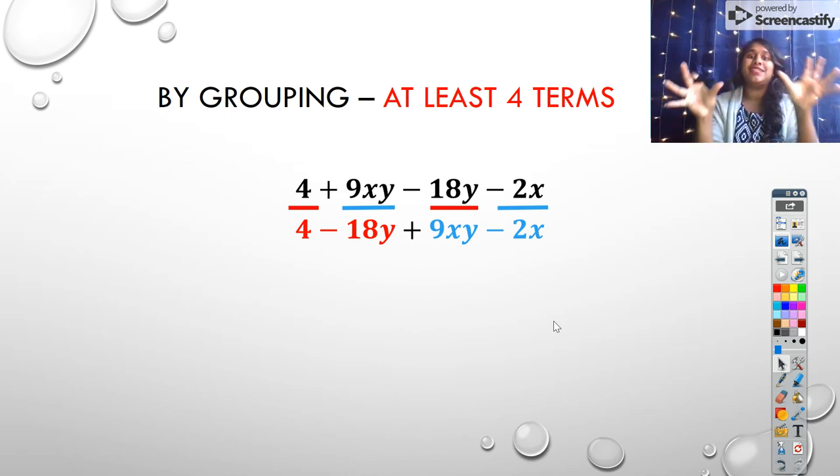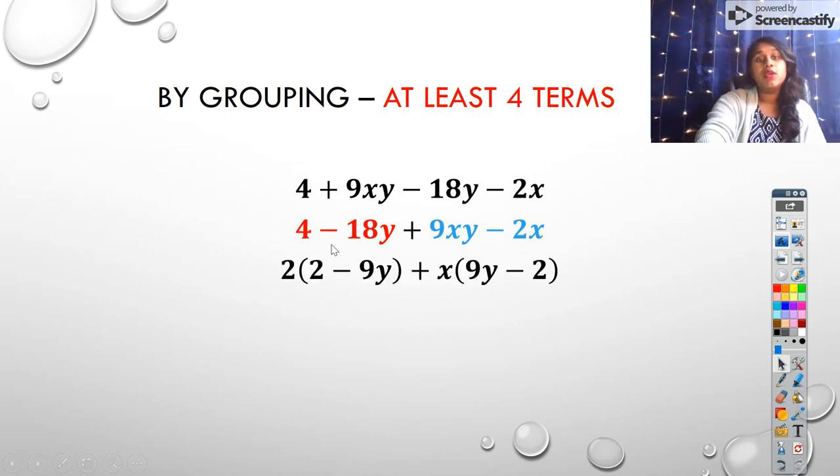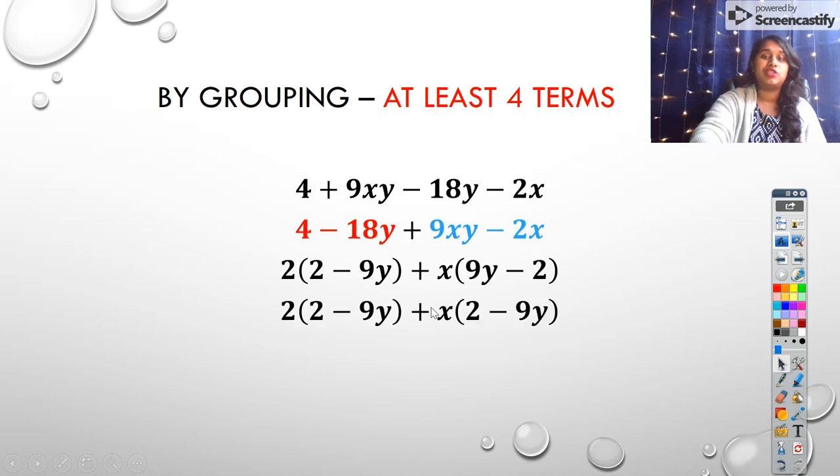And I ask myself what's common in that. What's common here was a 2. So I pulled out 2, was left with 2, was left with -9y. What's common here is the x. So I pull all that out. But my binomials right here, they're not quite the same. They're slightly different. If I want to make them exactly the same, all I would have to do is pull out a -1. So if I pull -1 out of positive 9y, I should be left with -9y. If I pull -1 out of -2, I should be left with positive 2. And this x should change to a negative sign.